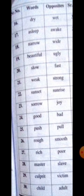There are more words opposites at page number 25. Dry (khushk) — wet (gila/tar). Asleep (soya hua) — awake (jaga). Narrow — wide (khula). Beautiful — ugly. Slow — fast. Weak — strong. Sunset (suraj ka gharoob hona) — sunrise (suraj ka taloo hona). Sorrow (gham) — joy (khushi). Good — bad. Push — pull. Rough (gair hamwar) — smooth (hamwar). Rich — poor. Master — slave. Culprit — victim. Child — adult.